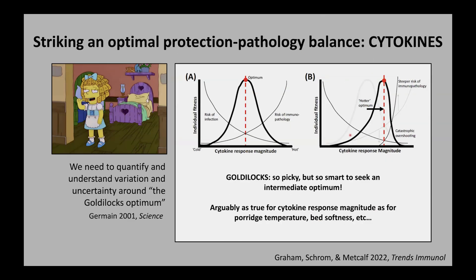Now if we look at panel B, there are contexts in which folks argue that it's not all as symmetrical as panel A suggests. Rather, in panel B, we see that the optimum is shifted to the hotter side — a hotter optimum — representing a context where infectious diseases perhaps pose a greater risk, and the risk of immunopathology rises quite steeply only at the most extreme end of the cytokine response magnitude spectrum. In this case, you would draw the optimum up at the hotter end.